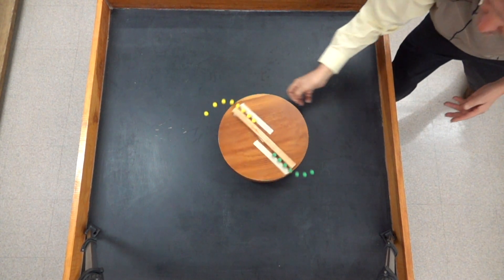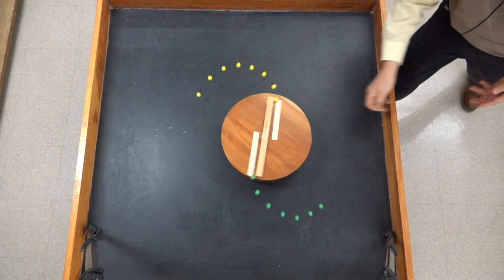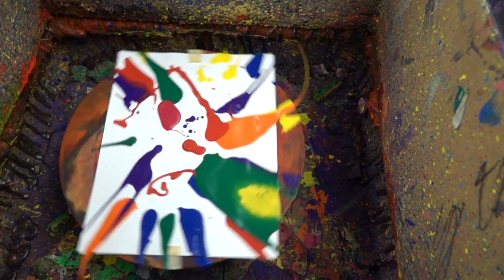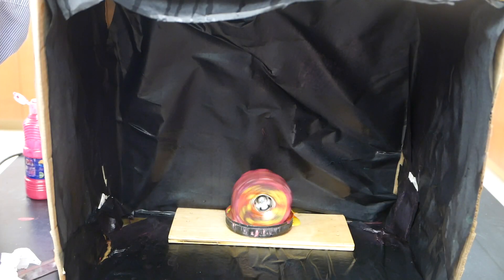The same would be true for the particles of paint. It doesn't matter whether they're coming off the spin art paper or off a spinning tire, the behavior is the same.